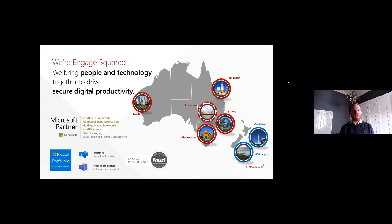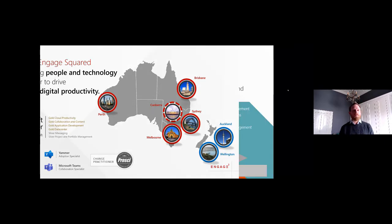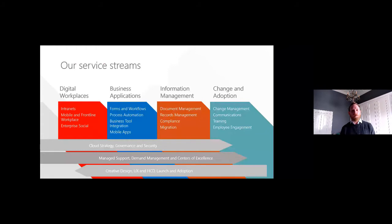We're lucky enough to be a Microsoft Preferred Partner for business applications in the Microsoft Charter program. We get great insights into what Microsoft is doing in this space, the ability to engage with them, look at new features coming through before they're available to the market, and really take advantage of that new technology. We're also well-versed in a range of different business scenarios and work across a heap of different verticals. We don't just operate in the business application space, but it's one of our four core verticals. We also do a heap of work with digital workplaces looking at intranets, and mobile frontline worker enablement using enterprise social to empower workers. We do a lot of work with information management, document management, records management, and compliance.